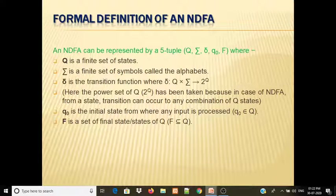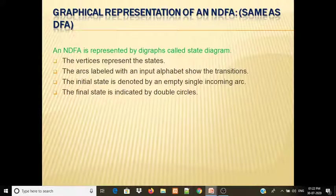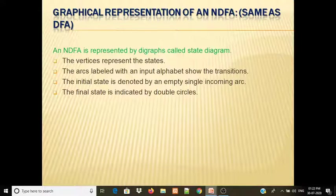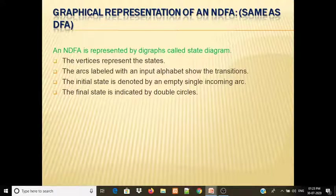Q0 is the initial state and F is the final state, indicated by a double arc. Now the graphical representation: an NDFA is represented by a digraph called a state digraph. The vertices represent the states. The arcs are labeled with an input alphabet. The initial state is denoted by an empty single incoming arc, and the final state is indicated by double circles.